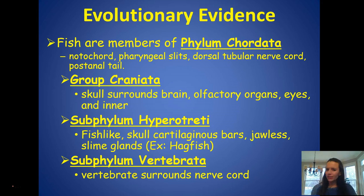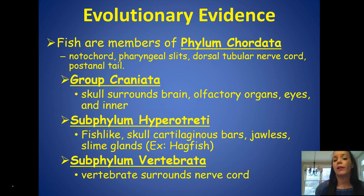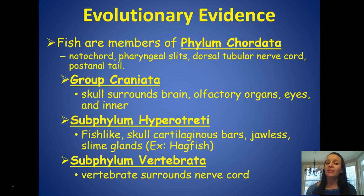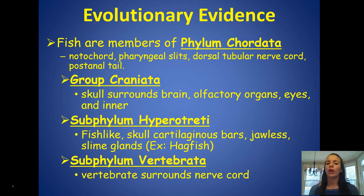First, what's the evolutionary evidence? Fish are the first members of phylum Chordata that we're going to study. They belong to this phylum because they have a notochord, pharyngeal slits, a dorsal tubular nerve cord, and a post-anal tail — all of which are necessary to be classified as phylum Chordata.